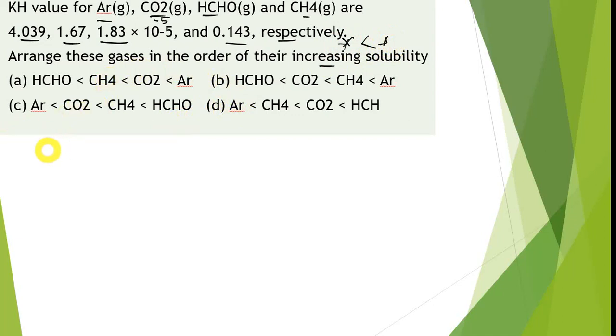Let us arrange these things. First, we will write the gas name and their KH value. Argon is 4.039, carbon dioxide is 1.67, formaldehyde is 1.83 into 10 to the power of minus 5, and for methane it is given as 0.143.